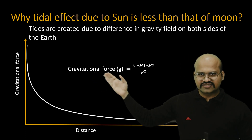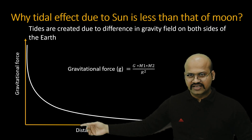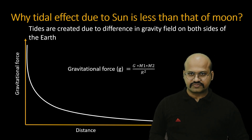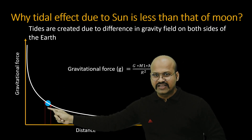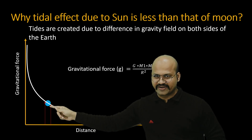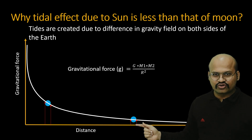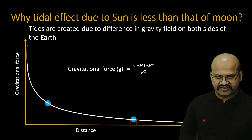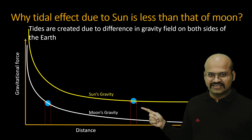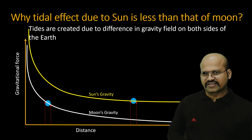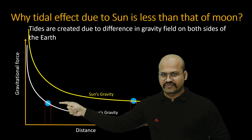To understand this, consider the gravitational force equation plotted as a curve where the x-axis is distance and the y-axis is the magnitude of gravitational force. If a planet is in the steep part of this curve, the difference in gravitational force on its two sides is significant. But if the planet is in the flat part of the curve, the difference in gravity on the two opposite sides is insignificant. For the sun's gravity, the earth is in the flat part, so the difference on the two sides is not significant.